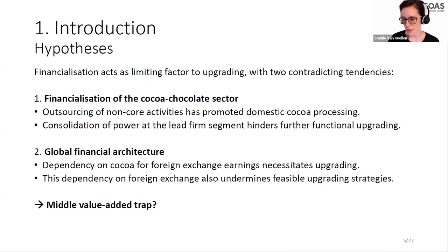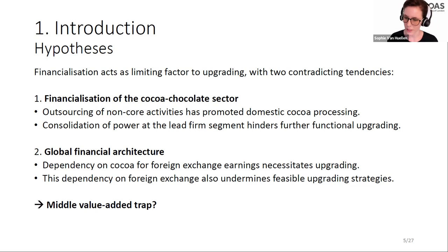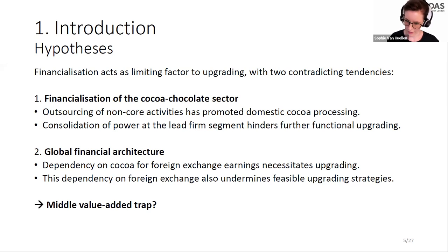Our hypothesis is twofold: financialization acts as a limiting factor, but there are contradicting tendencies — it both pushes towards upgrading and constrains it. At the sector level, financialization has promoted outsourcing of non-core activities, which has promoted some value addition in commodity-producing economies including Ghana at a semi-processed stage. But at the same time, financialization has contributed to consolidation of power at the lead firm segments, hindering further upgrading towards actual chocolate production.